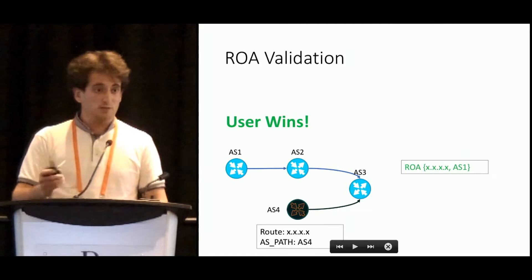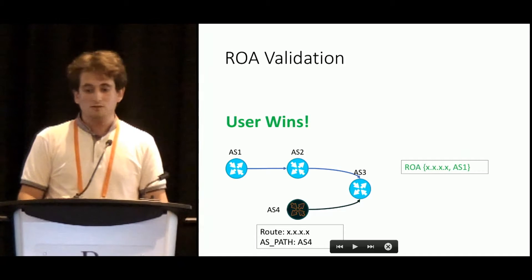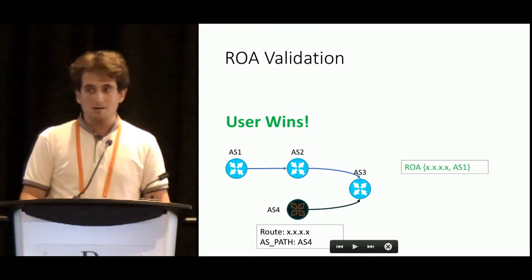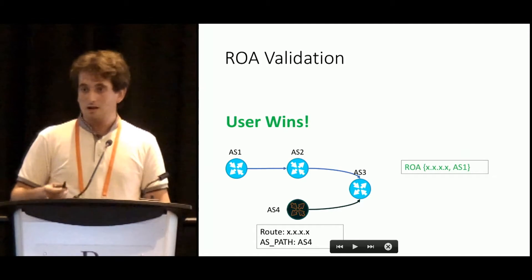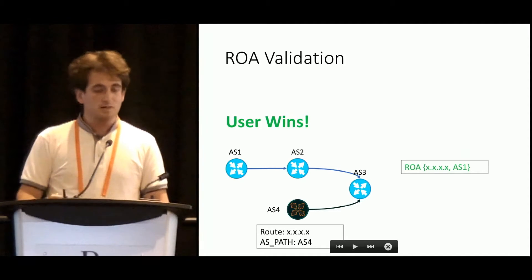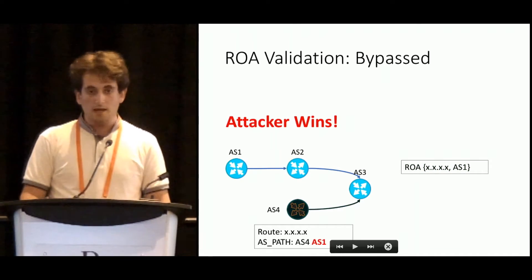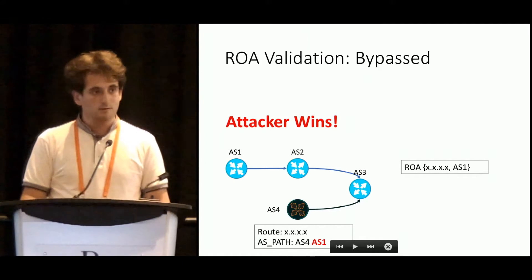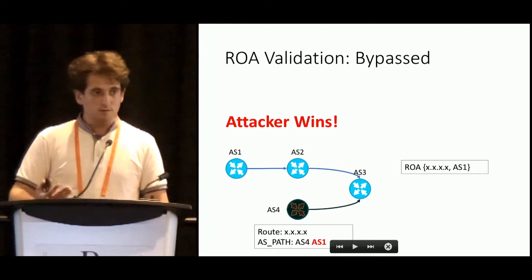Let's imagine that attackers have already bypassed IRR filters. But now, if AS4 tries to advertise a prefix from its own autonomous system number, it will be filtered — the outcome of the Route Origin Validation Procedure will be invalid. Unfortunately, it's not enough to stop the attacker, because it can add autonomous system 1 at the beginning of the AS path. And with this, autonomous system 3 will be forced to accept this prefix.